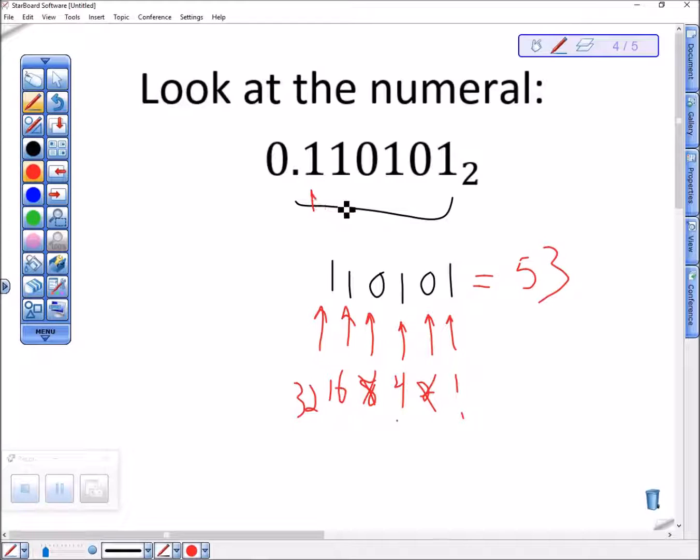And now this is the twos, fours, eights, sixteenths, thirty-twos, sixty-fourths place. This is fifty-three sixty-fourths. Okay, I figured out that's fifty-three. I put it in its place. It's sixty-fourths.